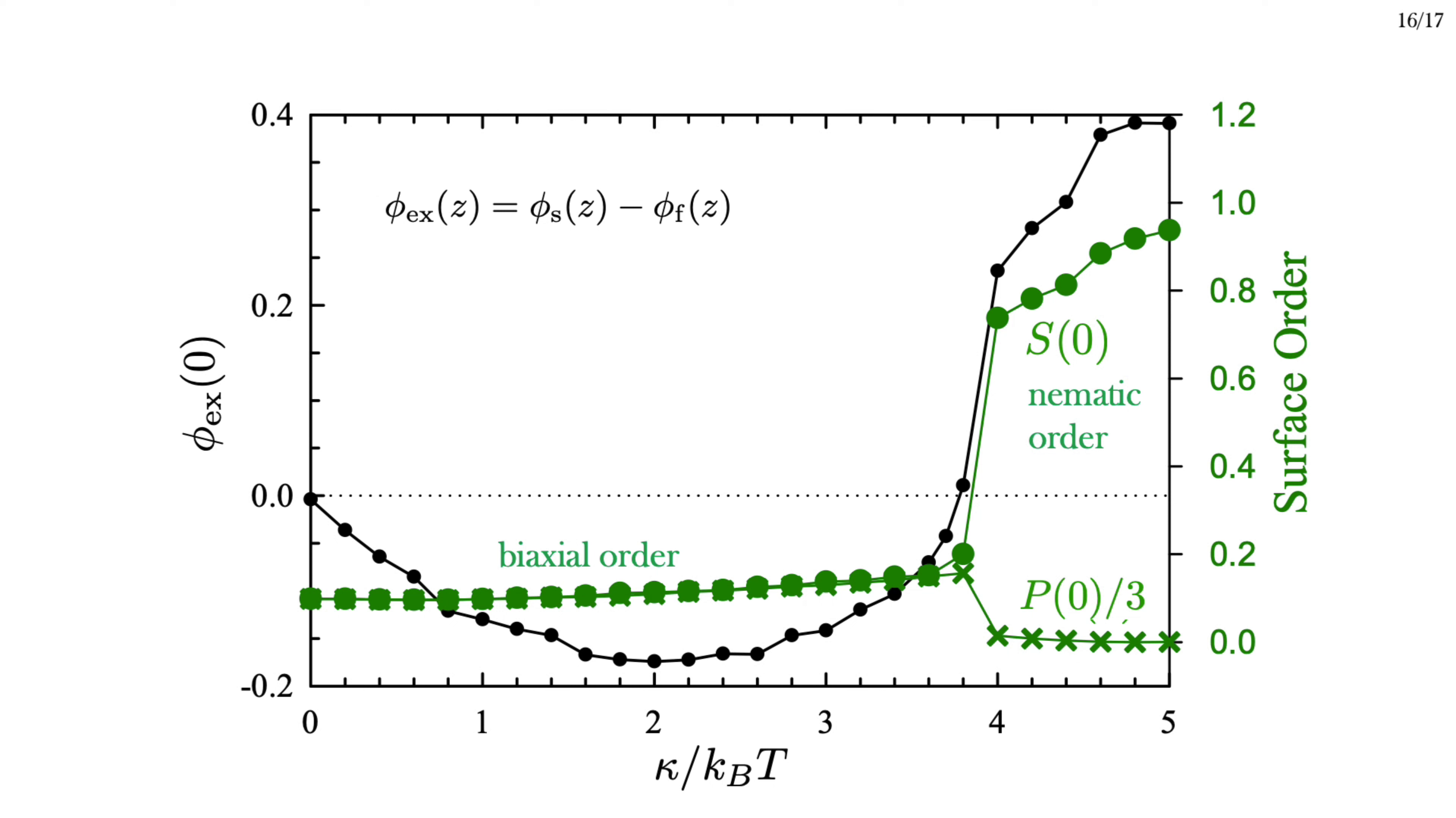To understand this further, I've plotted the order parameter of the stiff polymers in the surface layer. At low kappa, where there's a flexible excess, the biaxial order parameter is equal to three times the nematic order parameter. That is, P over three equals S. This indicates biaxial order at the surface. The stiff polymers preferentially align with the wall, but have no preference in the xy-plane. They just tend to be parallel with the wall, but not necessarily to each other. When the stiff polymer excess kicks in, the biaxial order parameter drops to zero, and the nematic order parameter increases. This is the onset of nematic ordering at the interface. The stiff polymers are pointing parallel to the wall, but have broken the rotational symmetry in the xy-plane, and are now aligned with each other.